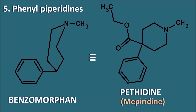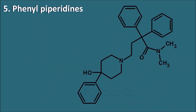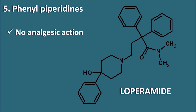Diphenoxylate is another phenylpiperidine having a phenyl group attached to the piperidine ring with ethyl carboxylate at the 4th position, and a large structure on the nitrogen. Loperamide is also a phenylpiperidine, but at the 4th position it has a hydroxy group instead of the ester. Loperamide has no analgesic action and is mainly used as an anti-diarrheal agent. So pethidine, diphenoxylate, and loperamide all belong to the phenylpiperidine category.